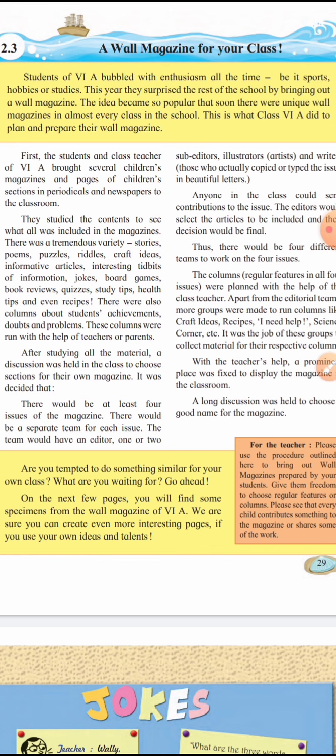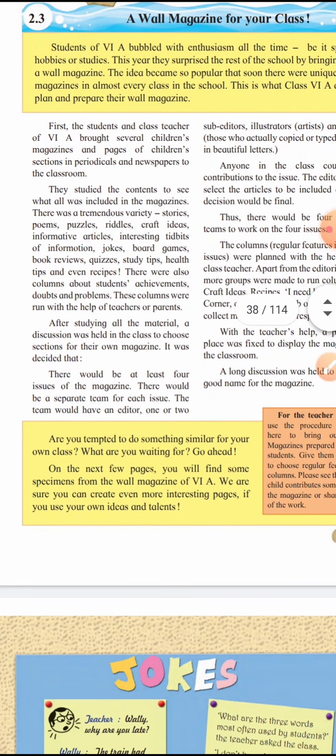This is what class 6A did to plan and prepare their wall magazine. First, the students and class teacher of 6A brought several children's magazines and pages from the children's section of periodicals and newspapers to the classroom. They collected important cuttings — news, study material, school-related content — and placed them together.